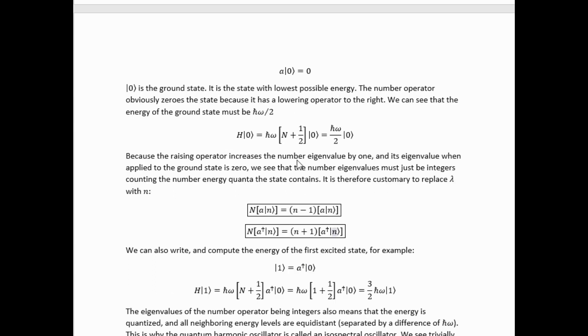Because the raising operator increases the number eigenvalue by one and its eigenvalue when applied to the ground state is zero, we see that the number eigenvalues must just be integers counting the number of energy quanta the state contains. It is therefore customary to replace lambda with n, where n is taken to be an integer.